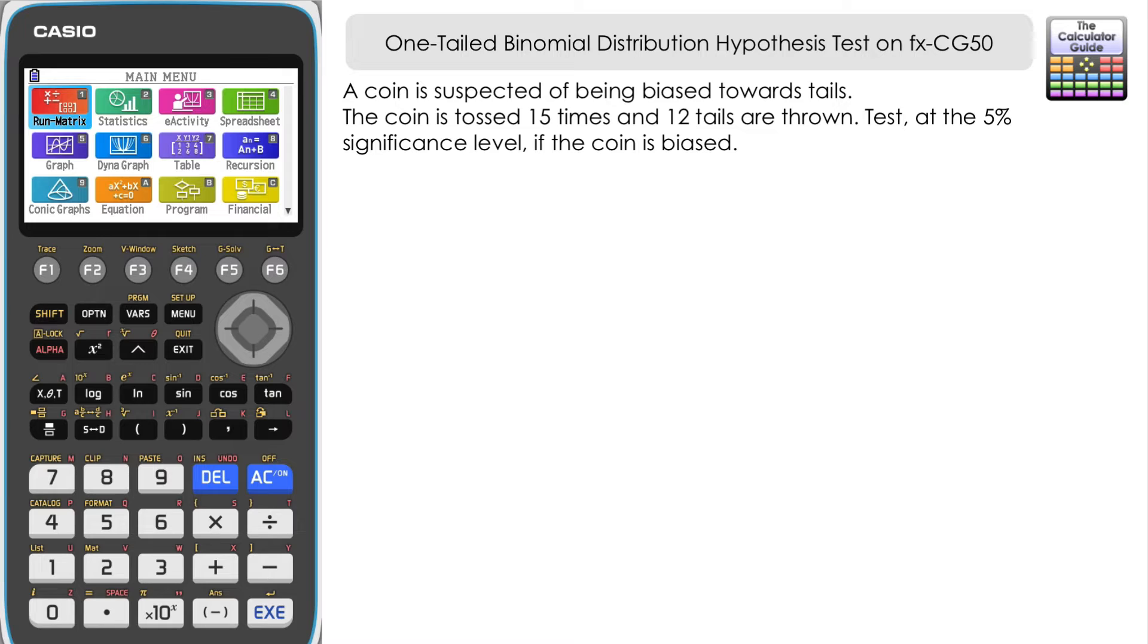Before we use the FXCG50, we need to define some things from this question. First is P, which is the population parameter. That's the probability of a tail from a coin toss, and we're going to use that to set up our null and alternative hypothesis.